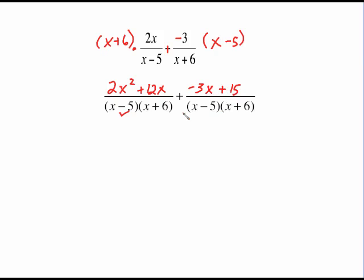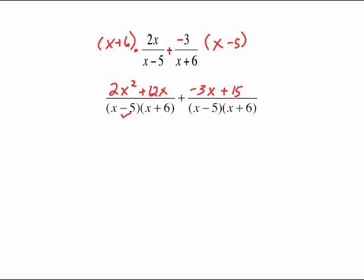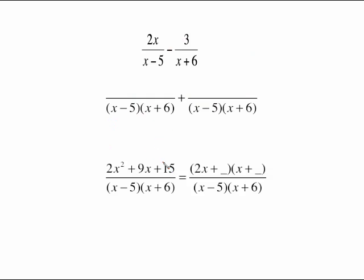So now I've got my common denominator. I've created my new numerators. Now it's time to put our numerators together. We can just combine a little bit of like terms here. We have just the 2x squared which is going to stay. The 12x minus 3x gives us 9x plus 15 over of course this denominator. So that's what we have: 2x squared plus 9x plus 15.